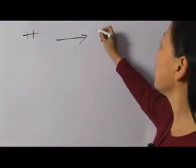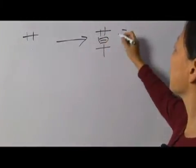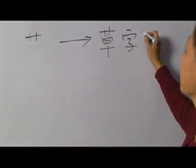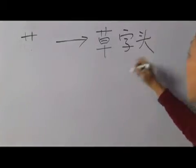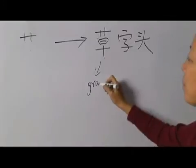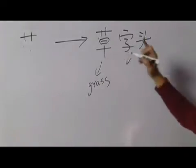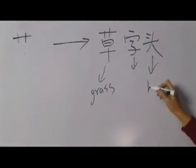This radical is called 草字头. 草 means grass. 字 means character, this character. 头 means head.